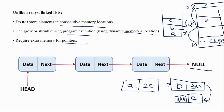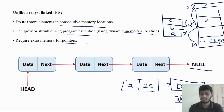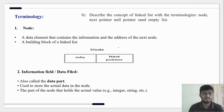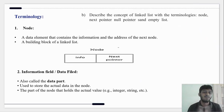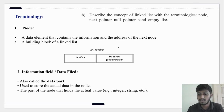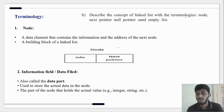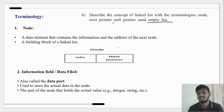This is the basic difference between array and linked list. Now let's move forward to the terminologies — there are definitions. For a four-mark question, you can describe the concept of linked list with terminologies: node, next pointer, null pointer, and empty list.